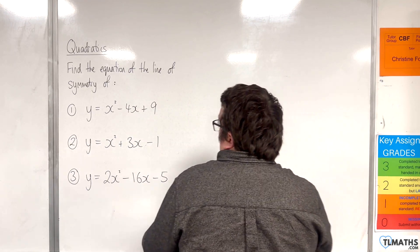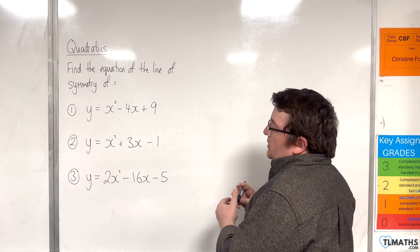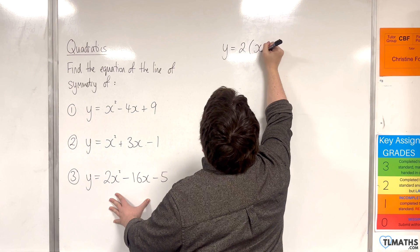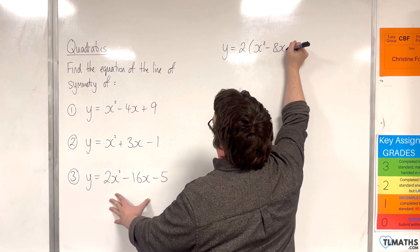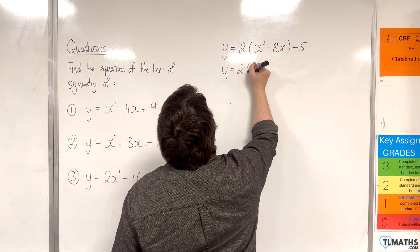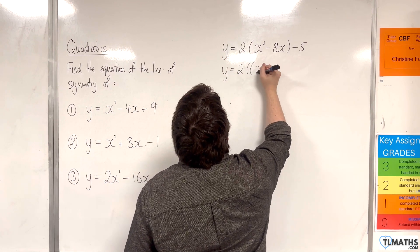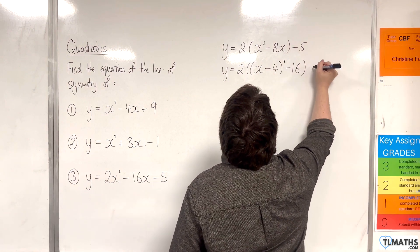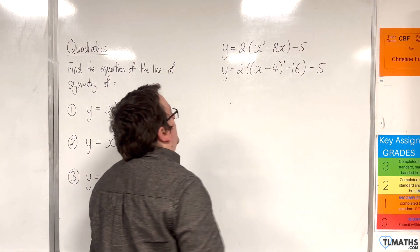Number 3, y equals 2x squared take away 16x take away 5. So first of all, I'll factor the 2 out of the first two terms, so x squared take away 8x take away 5. Then complete the square on what's inside the bracket, so x take away 4 all squared. Take away that number squared, so take away 16. Close the bracket, and then take away 5.